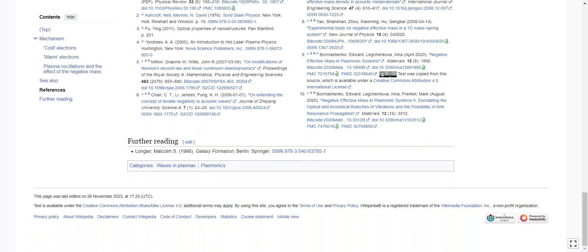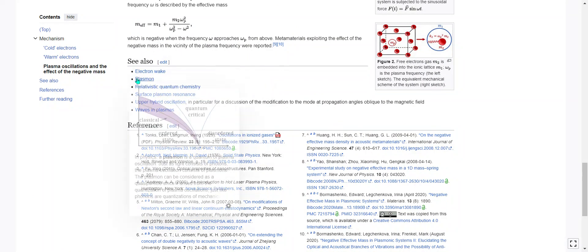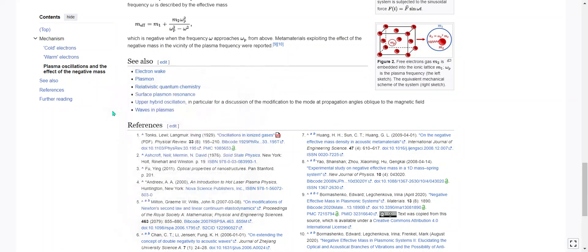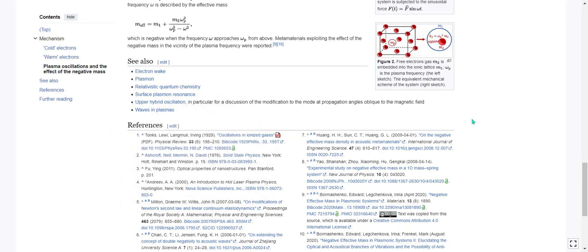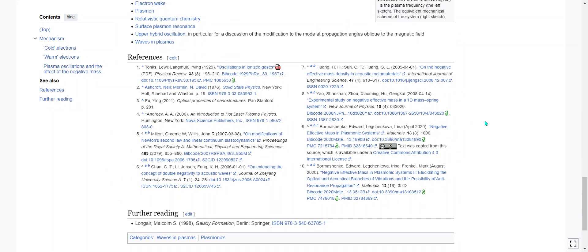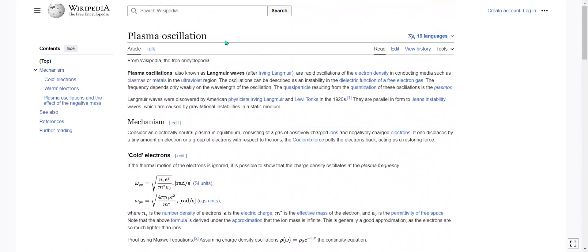And that is plasma oscillations. There's a lot more that can be read about here. Electron wake, plasmon, relativistic quantum chemistry, surface plasmon resonance, upper hybrid oscillation, and generally waves and plasmas. And there are all of our sources. Later.